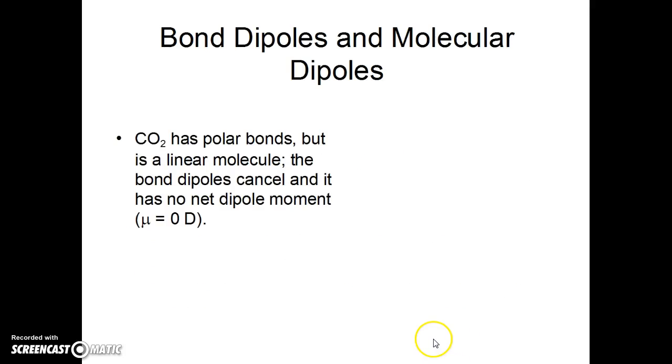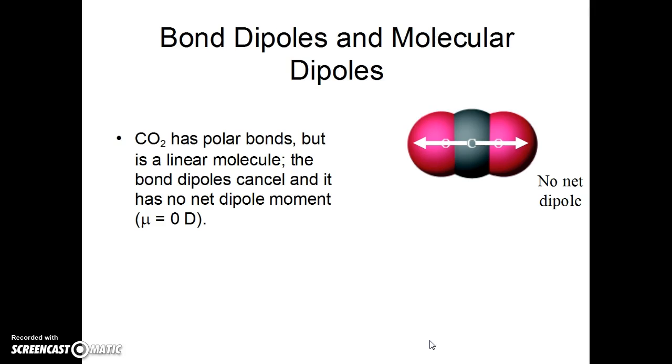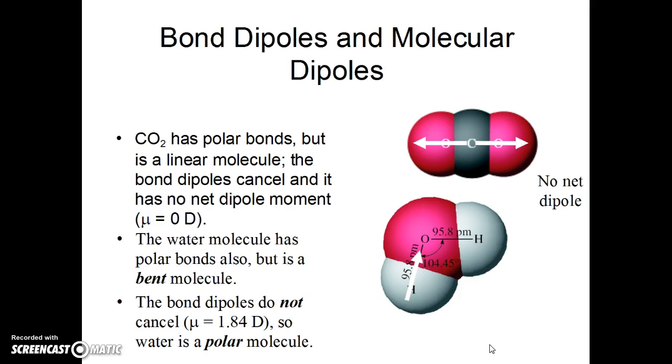Here's another example. Carbon dioxide has polar bonds, but it's a linear molecule. The bond dipoles cancel, and there is no net dipole moment in the molecule overall. The water molecule also has polar bonds, but it's bent. The bond dipoles do not cancel. They're pointing kind of in the same direction. And water is a polar molecule. It has a net dipole moment of 1.84 Debye.